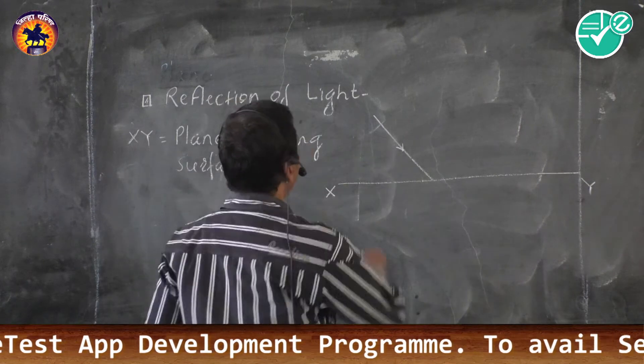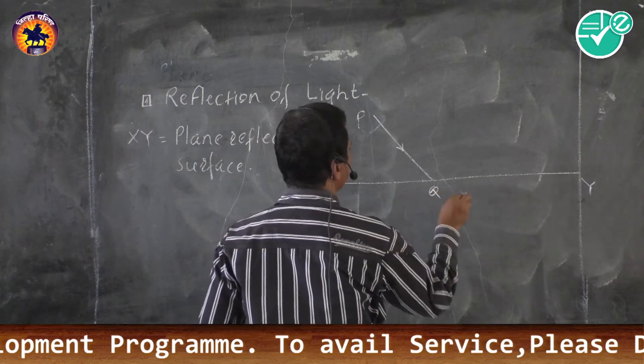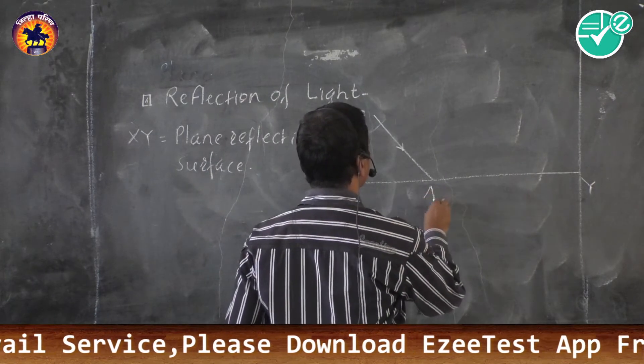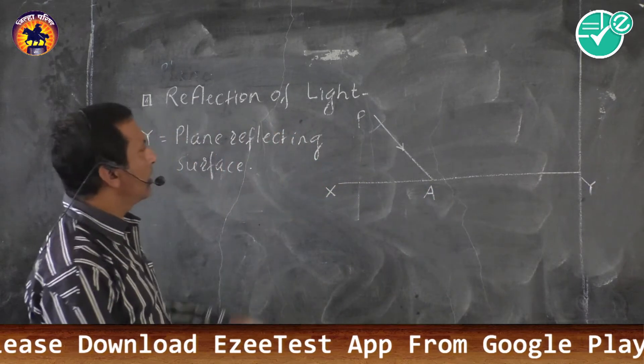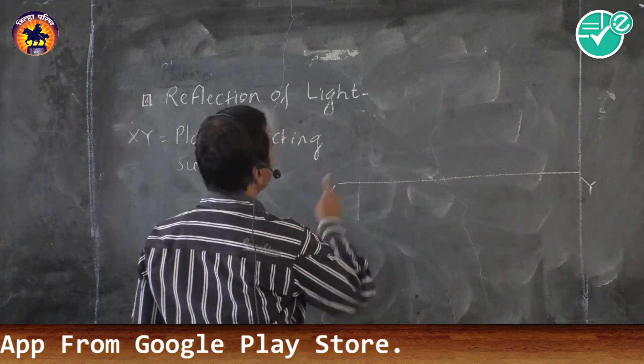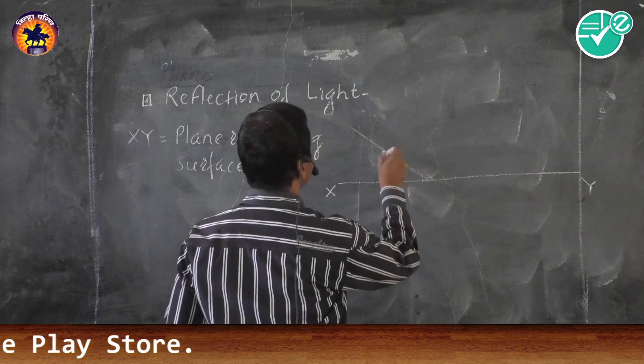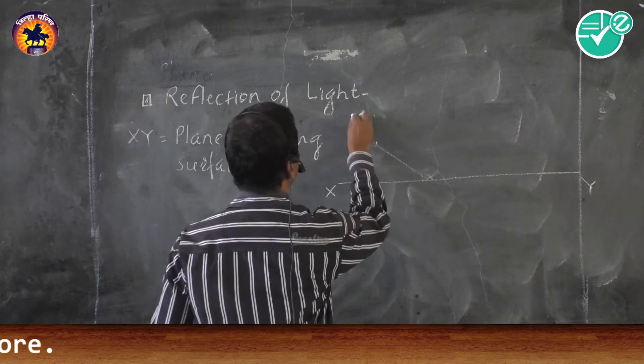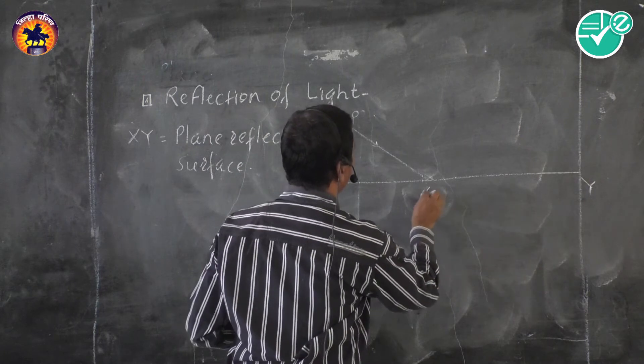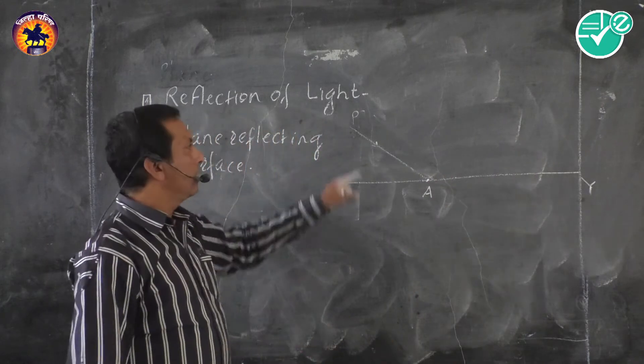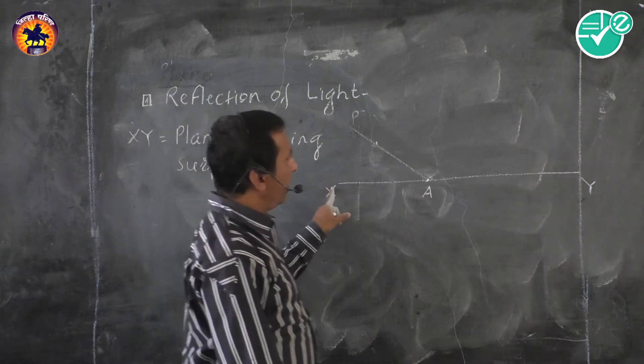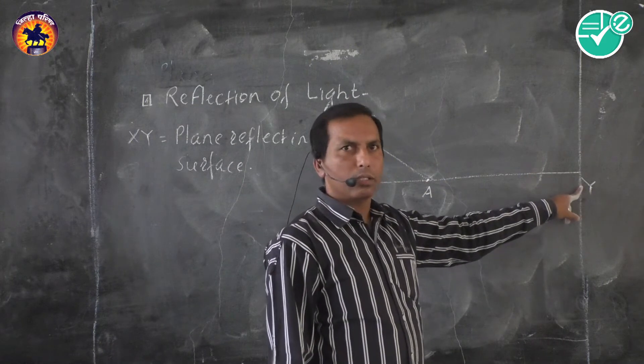Suppose PA is an incident ray, incident at point A on plane reflecting surface XY.